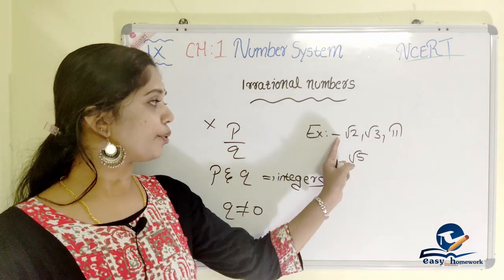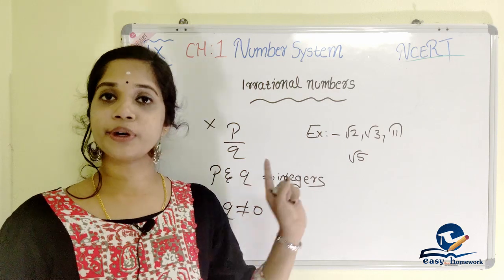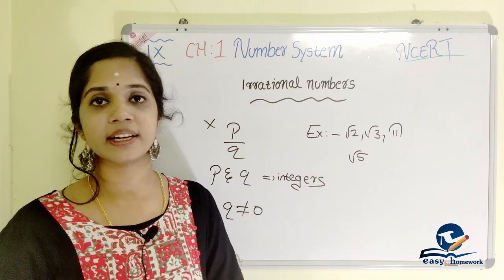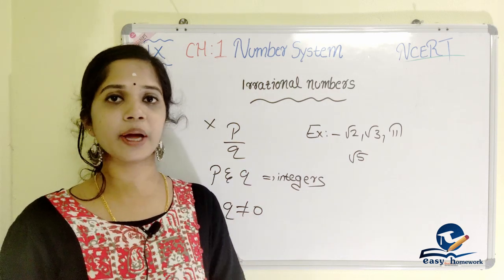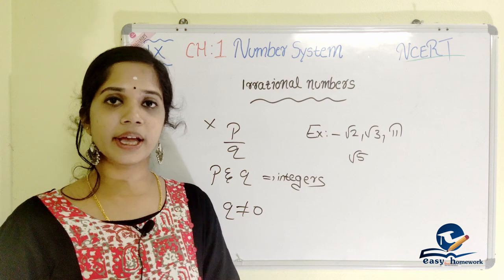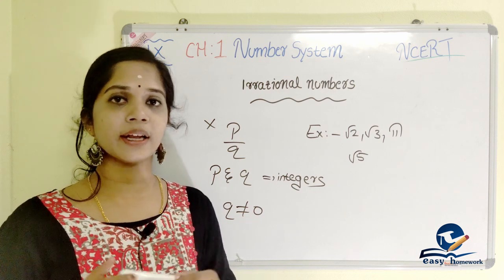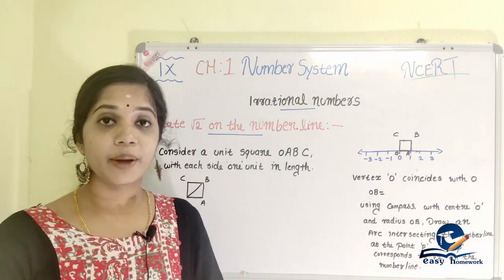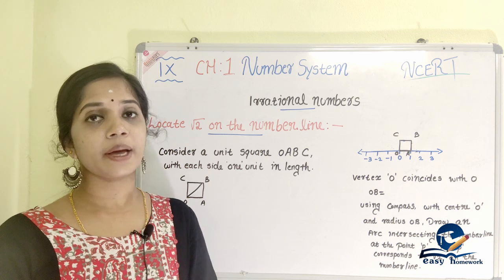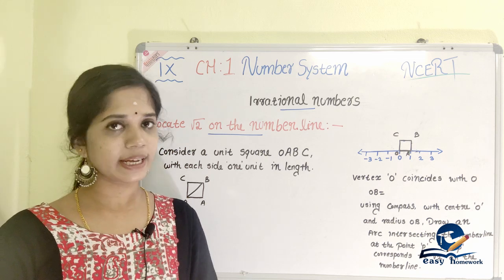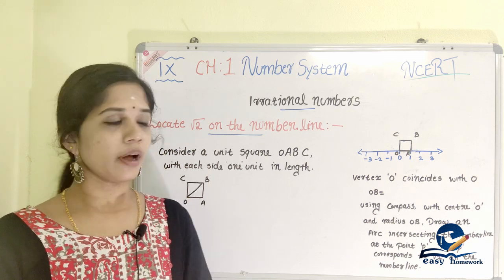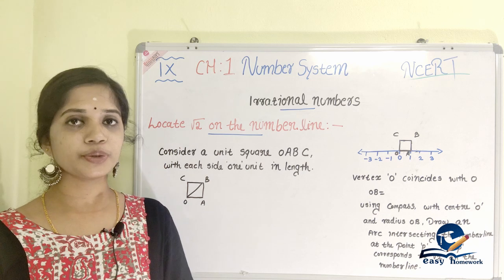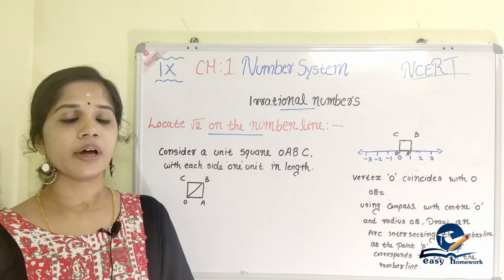We are going to look at where irrational numbers are located on the number line. We will study the number line representation of root 2.